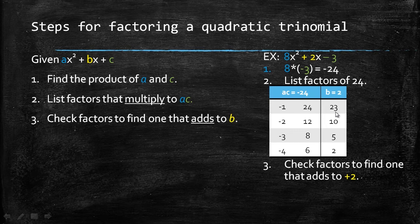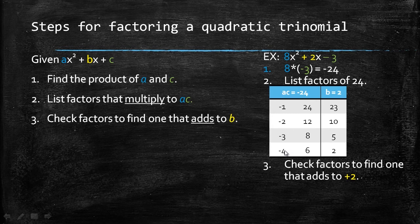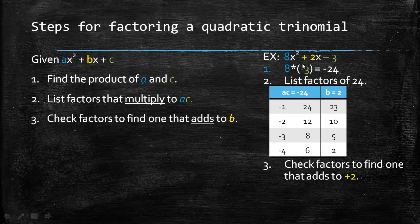Negative 1 plus 24 is positive 23, not what I'm looking for. Negative 2 plus 12 is negative 10, not what I'm looking for. Negative 3 plus 8 is a positive 5, not what I'm looking for. And then I've got negative 4 plus 6. Well, negative 4 plus 6 gives me a positive 2, which is exactly what I want.